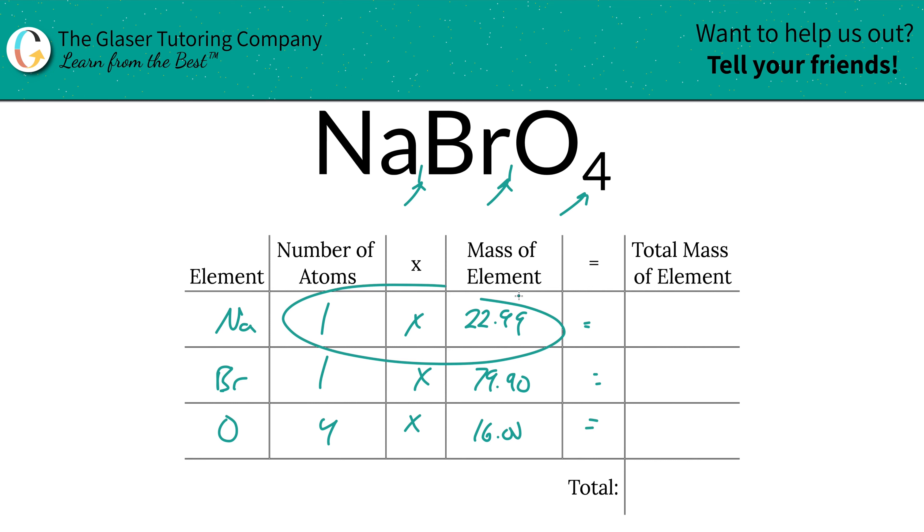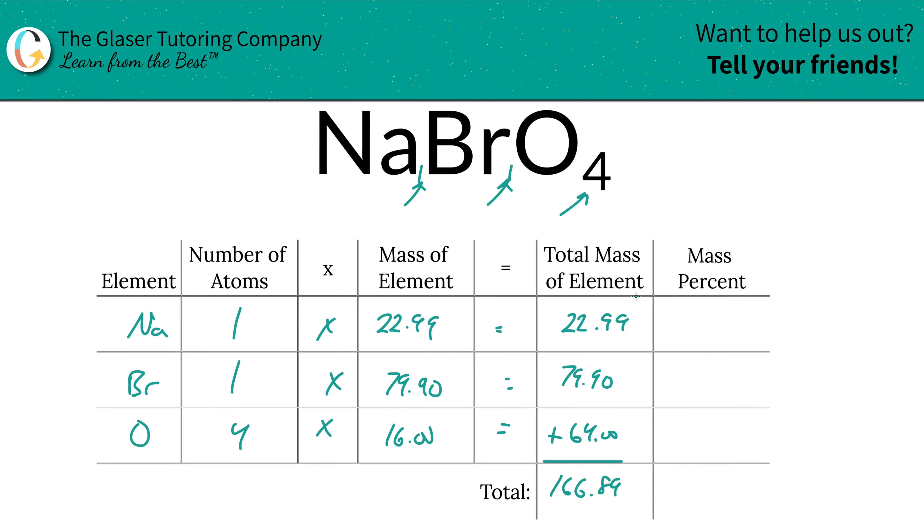Then we're simply going to multiply this row across to find the total mass of that particular element. So the total mass of the sodium here is 22.99, bromine is 79.90, and oxygen will be 64. And there you have it, the total mass of the compound. We now found it. So the next step is to take this total mass and use it to calculate the percents. I'm going to add a column to the table.